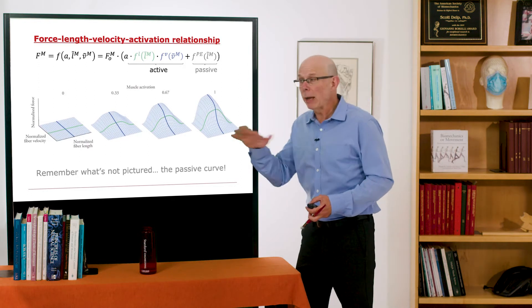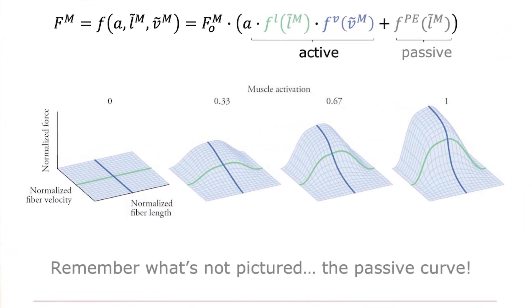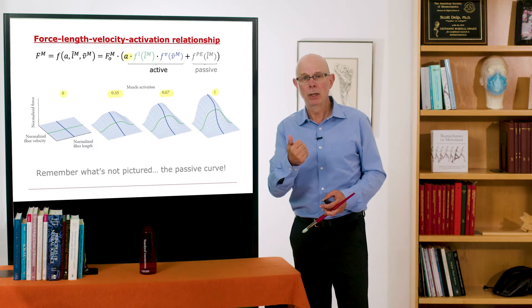So you can create this family of surfaces where here, activation is 0. Here, activation is 1. And I've just drawn two curves that are intermediate muscle activations, 1 third and 2 thirds here. So you can imagine muscle being computed as a function of its activation, of its length, and of its velocity.